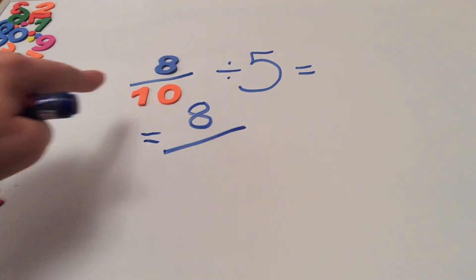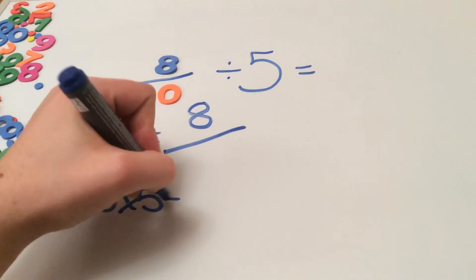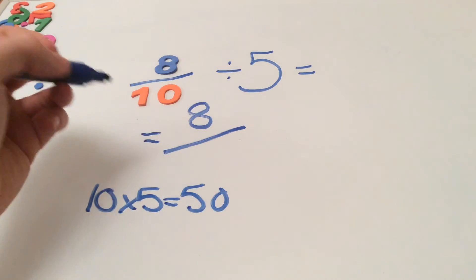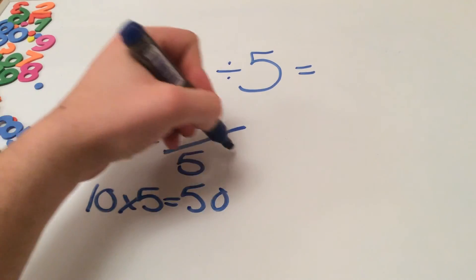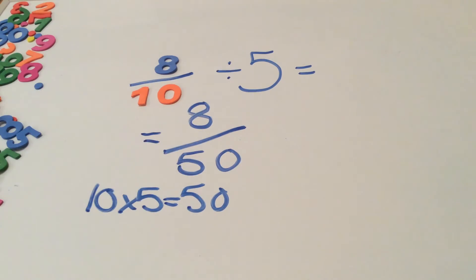Step 2 we do the 10 multiplied by the 5. So 10 times 5 equals 50. So our final answer is 8 over 50. So 8 tenths divided by 5 equals 8 over 50.